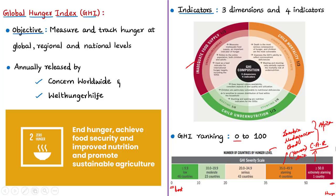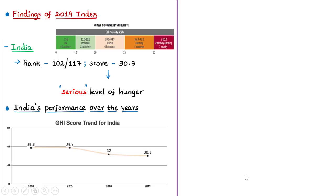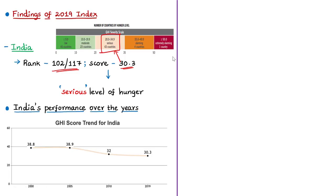India was ranked 102nd out of 117 countries in the 2019 index with a score of 30.3, placing it in the serious category. India's score in 2000 was 38.8, and the level of hunger has decreased continuously since then except between 2000 and 2005. However, comparing India's rank with its neighborhood, Pakistan is ranked 94th, Nepal 73rd, and Sri Lanka 66th — India's rank is at the bottom compared to these three neighbors.